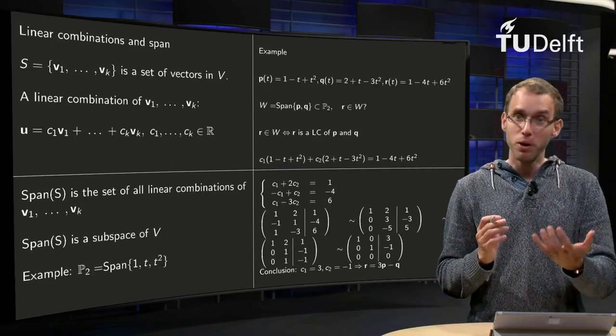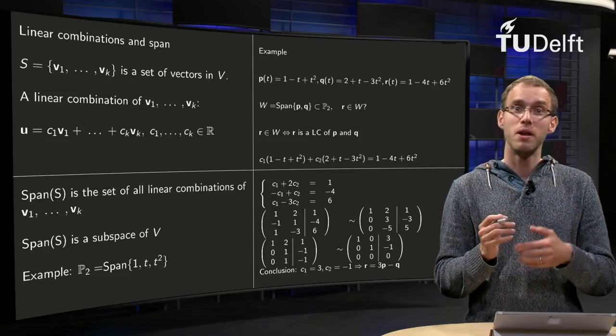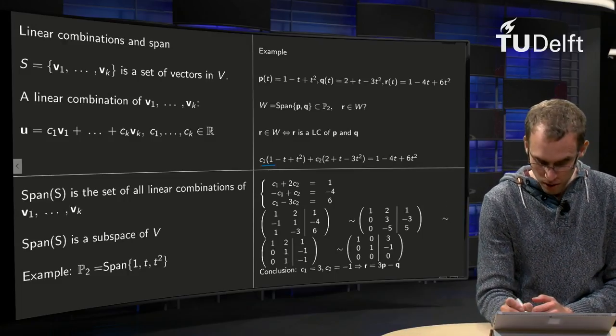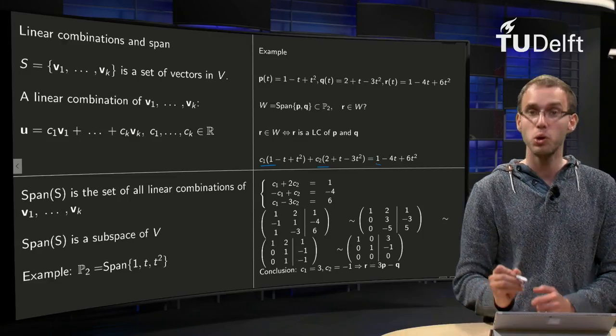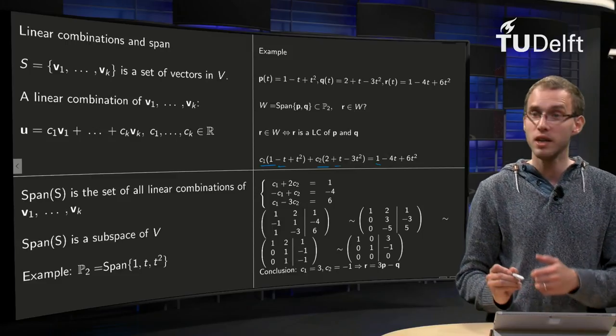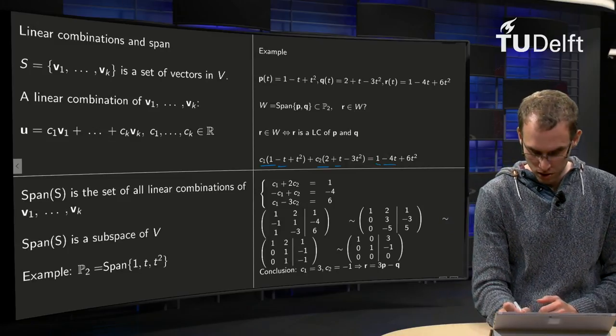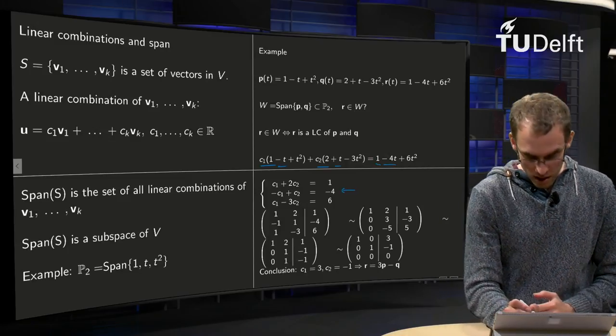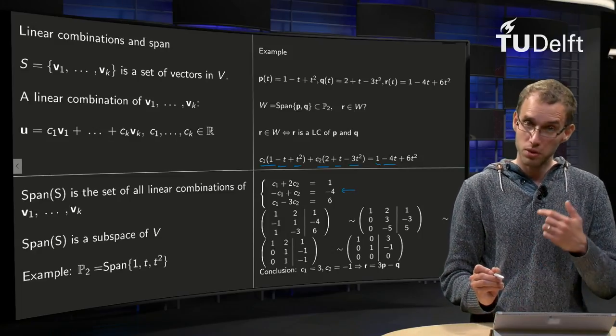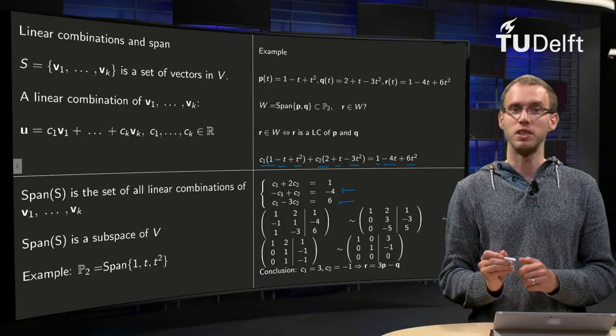Those polynomials are only the same if the coefficients in front of all powers of t are the same. So for the constant term, we have C1 plus 2C2, which has to equal 1 on the right-hand side. For the t term, minus C1 plus C2 has to equal minus 4, which gives us our second equation. And finally, for the t squared term, C1 minus 3C2 has to equal 6, which gives us our third equation.